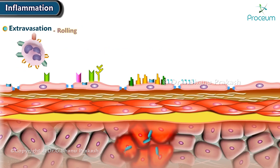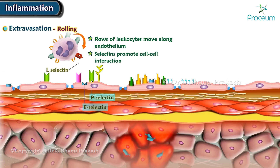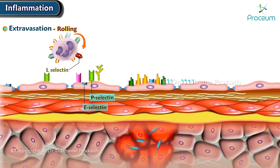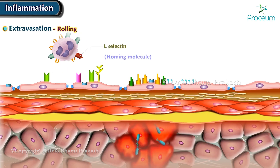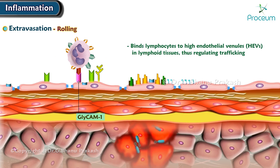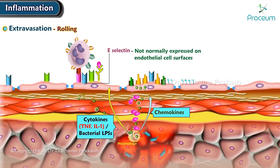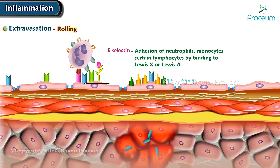The second step is called rolling — when rows of leukocytes move along the endothelium. There are selectins that promote cell-to-cell interaction. L-selectin is a homing molecule found on many types of leukocytes; it binds lymphocytes to high endothelial venules, or HEVs, in lymphoid tissues, thus regulating trafficking. E-selectin is not normally expressed on endothelial cell surfaces, but is induced by inflammatory mediators such as cytokines or bacterial lipopolysaccharides.